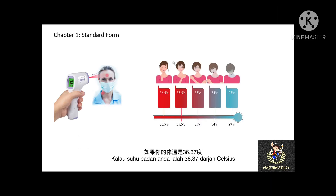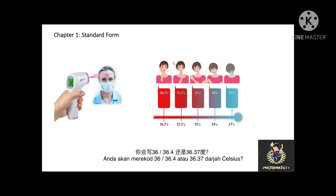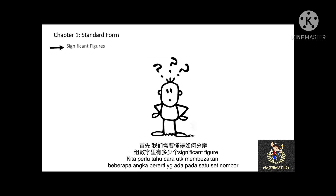Before we start this chapter, let me ask you a question. If your body temperature reading is 36.37, you will record your body temperature with how many significant figures — will you record 36 degrees, 36.4, or 36.37 degrees Celsius? This is what we will learn in this chapter: significant figures.